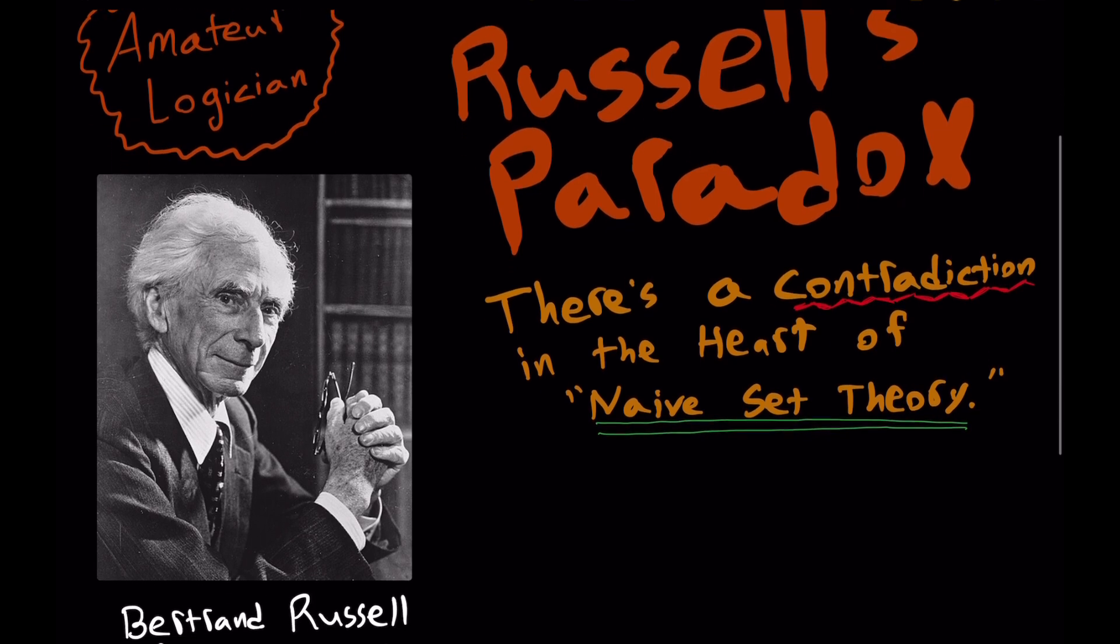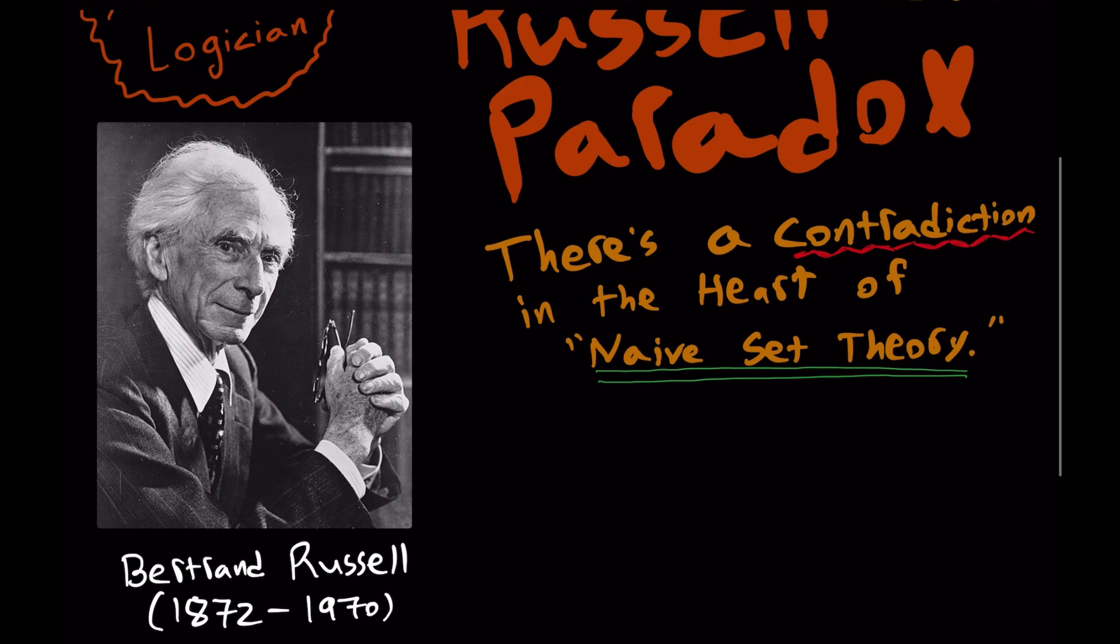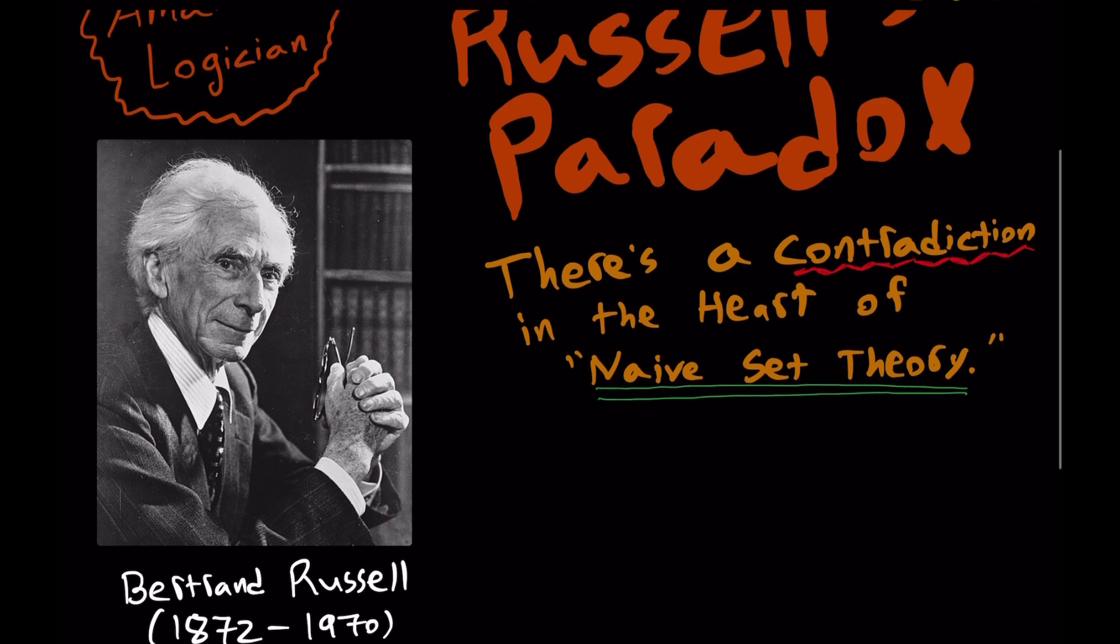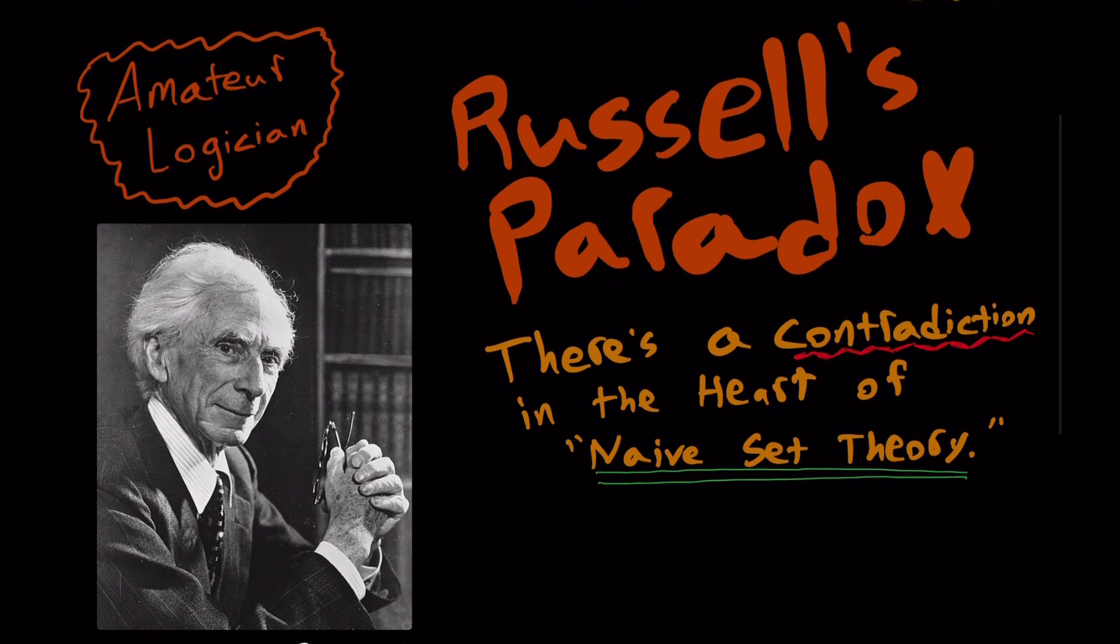There's a contradiction in the heart of what we today call naive set theory. This contradiction was discovered by the great philosopher and logician Bertrand Russell. Loosely speaking, a set is a collection of things, a group of things. It contains things.